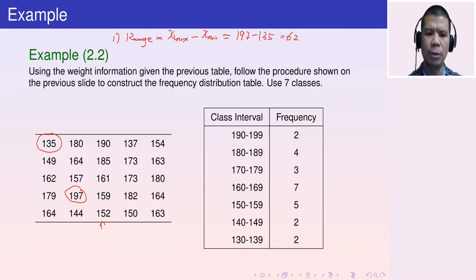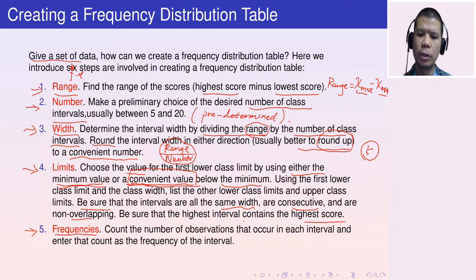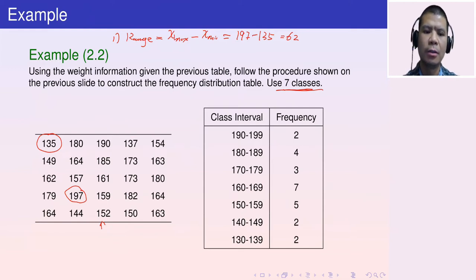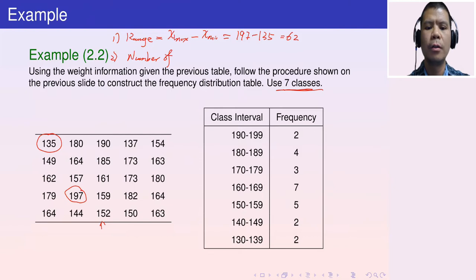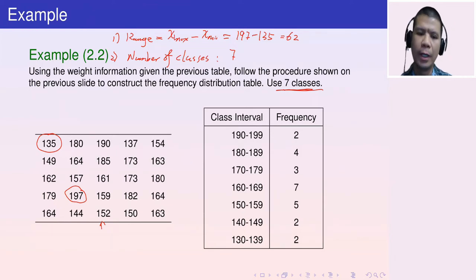Step two: determine the desired number of intervals. This is usually predetermined. In our example, we want to use seven classes, so the number of class intervals is 7.